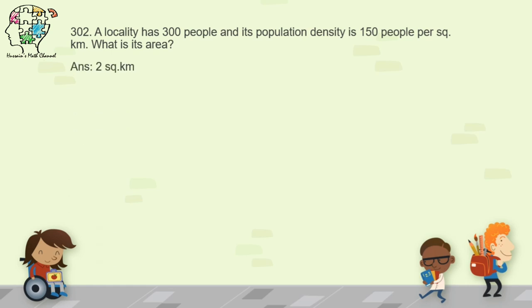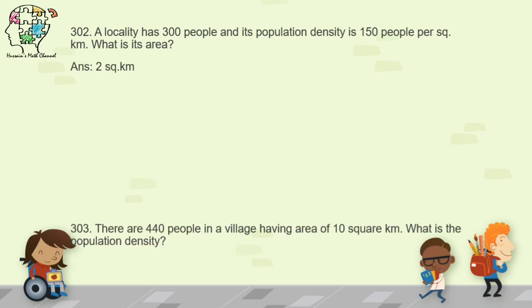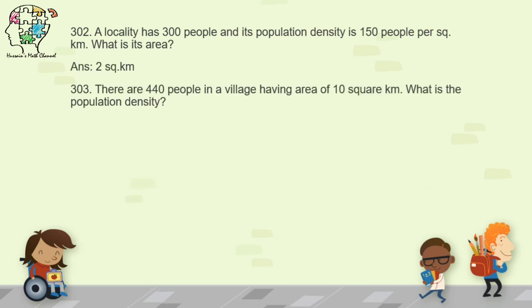Question 303: there are 440 people in a village with an area of 10 square kilometers — what is the population density? The population density is 44 persons per square kilometer. Remember to write the unit.